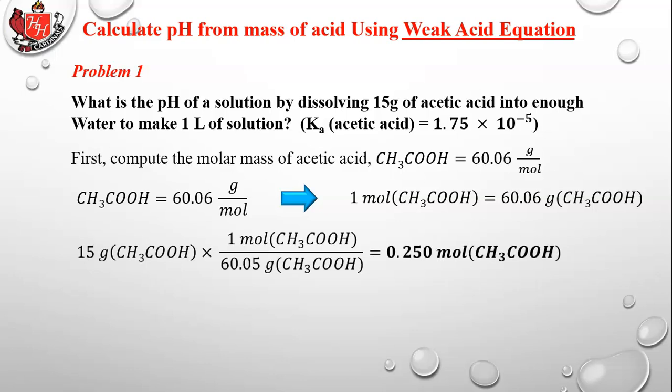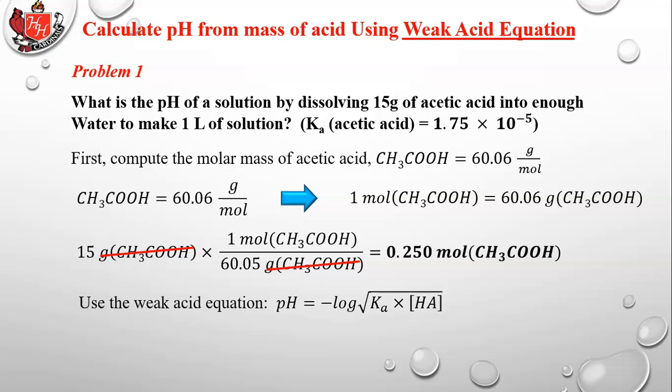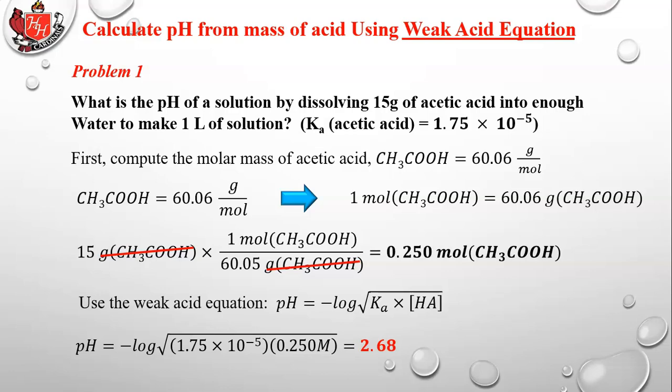With 15 grams, set up the ratio: one mole of acetic acid over 60.06 grams. The grams cancel and you get 0.250 moles of acetic acid. Since there's one liter of solution, the concentration is 0.25 molar. Plugging into the weak acid equation with Ka = 1.8 × 10⁻⁵ and concentration 0.25 M, you get pH = 2.68.